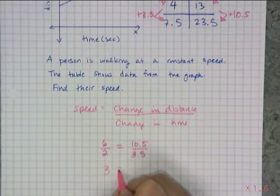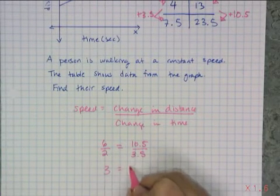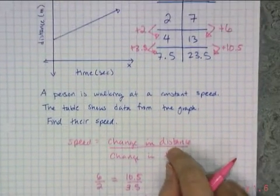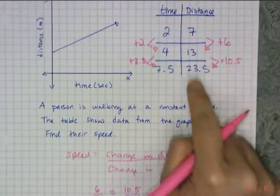And 6 over 2 is 3, and 10.5 divided by 3.5 is also 3. So I have verified that this person is indeed walking at a constant speed using this table.